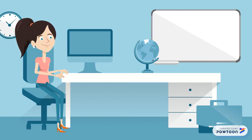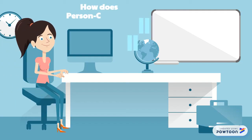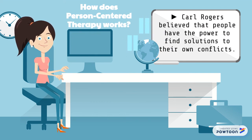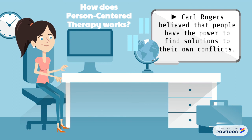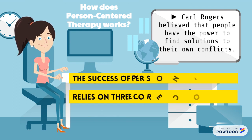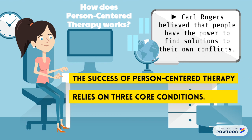How does person-centered therapy work? Carl Rogers believed that people have the power to find solutions to their own conflicts. The success of person-centered therapy relies on three core conditions.